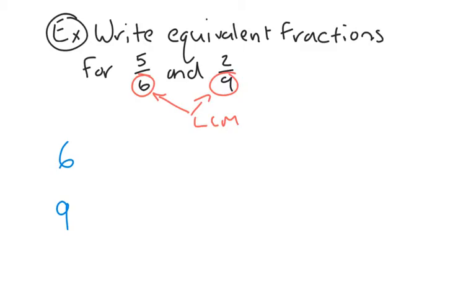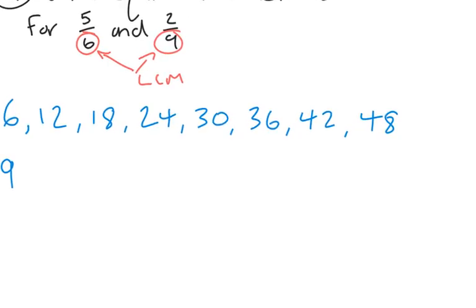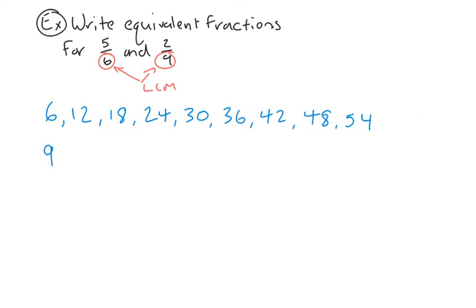This might take a while. Multiples of 6: 12, 18, 24, 30, 36, 42, 48, 54. Now let's look at 9: 9, 18, 27, 36, and 36 plus 9 is 54. We'll stop at 54.